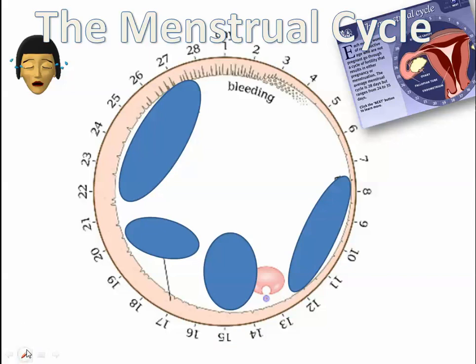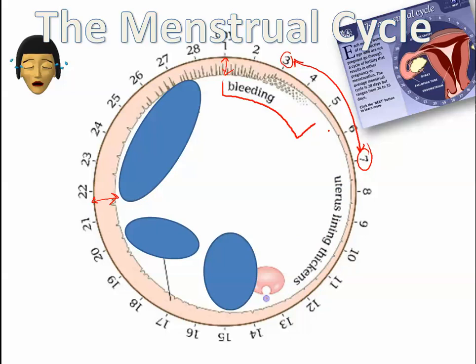The first five days are when the bleeding actually occurs — that's the beginning of a period. It could be between three and seven days, but the average is five days. That's when the uterine wall starts to shed. You can see the relative thickness of the wall: over here it's pretty thick, and over here it gets thin as it gets broken down. That's when the bleeding, or the period, actually happens.